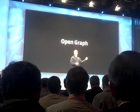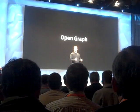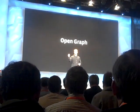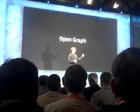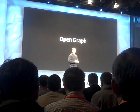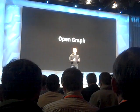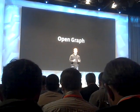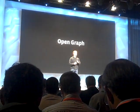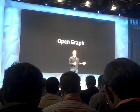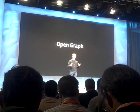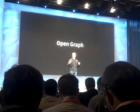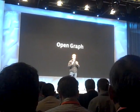It means that the web can become a set of personally and semantically meaningful connections between people and things. I am friends with you. I am attending this event. I like this band. These connections aren't just happening on Facebook — they're happening all over the web. And today, with the open graph, we're going to bring all of these together.